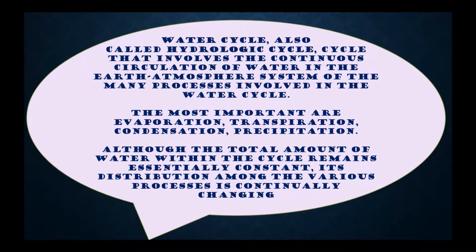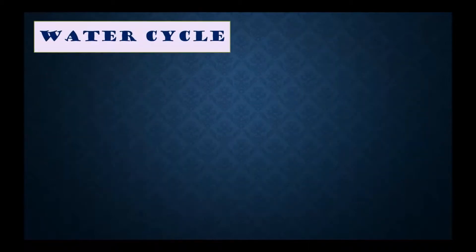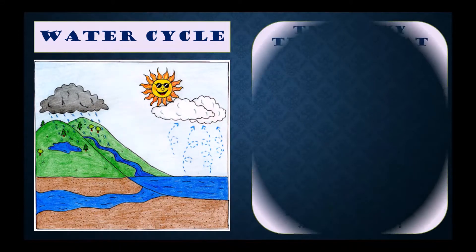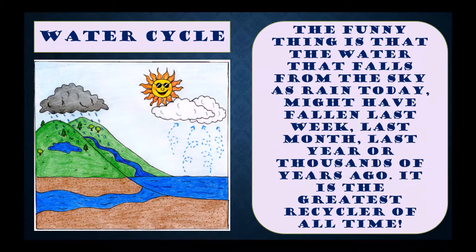Although the total amount of water within the cycle remains essentially constant, its distribution among the various processes is continually changing. The funniest fact about water cycle is the water that falls from the sky as rain today might have fallen last week, last month, last year, or thousands of years ago.